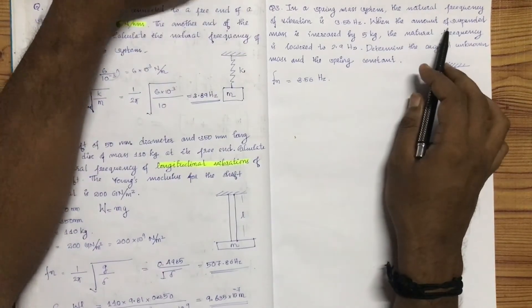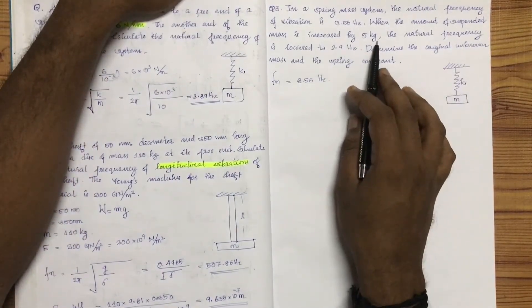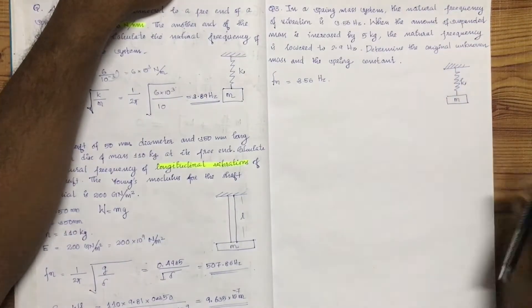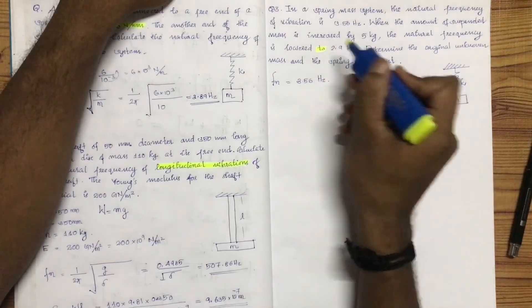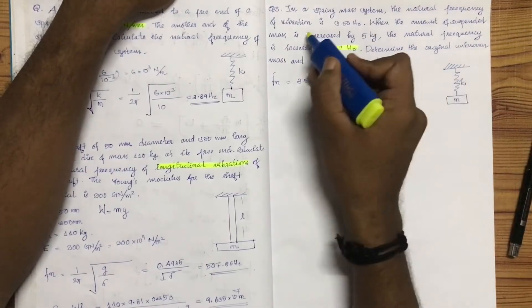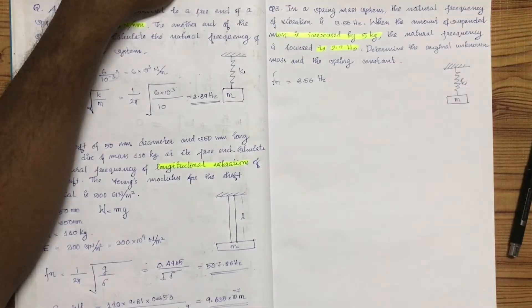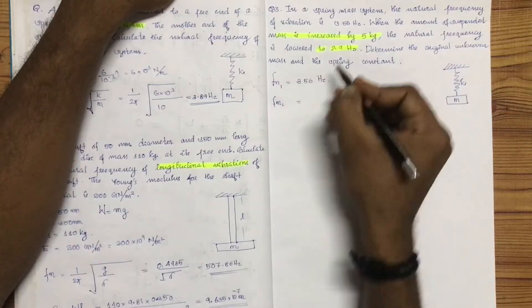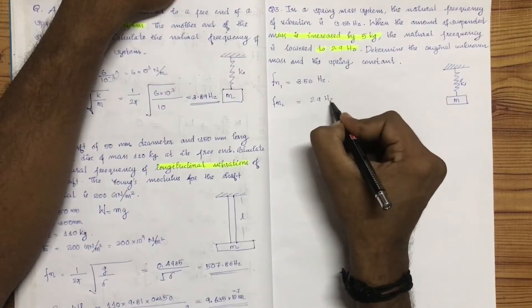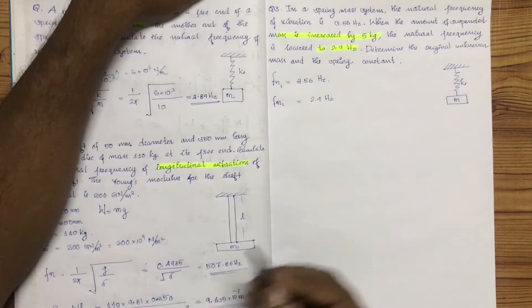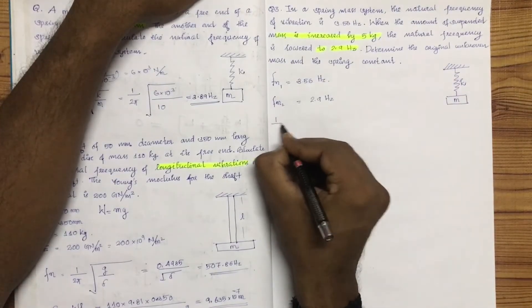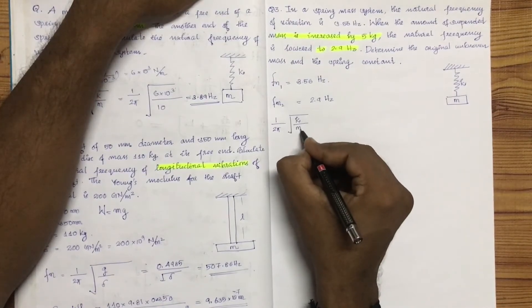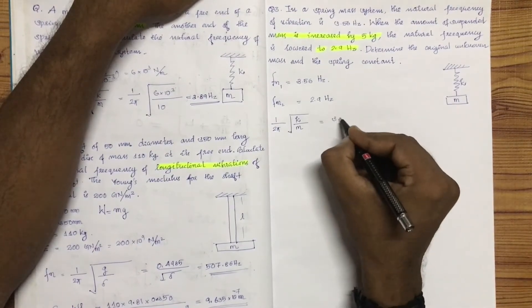The natural frequency of vibration is 3.56 Hz. When the suspended mass is increased by 5 kg, the natural frequency is lowered to 2.99 Hz. So fn1 = 1 by 2π into root of k by m = 3.56. This is equation 1.